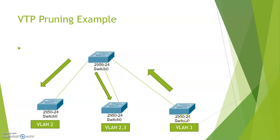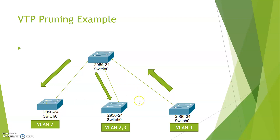This switch is configured with VLAN 2 and this switch is configured with VLAN 3. Whenever the host in VLAN 3 sends information via this trunk, the information will be forwarded via broadcast to all other trunks and other switches. So even this trunk will carry VLAN 2 and VLAN 3 information. On this specific trunk, VLAN 3 is unnecessary traffic, and on this trunk, VLAN 2 is unnecessary traffic.